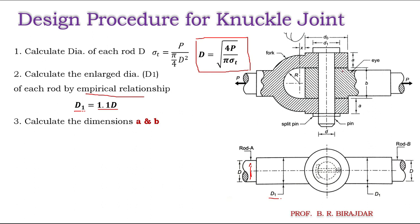The dimension a is the thickness of the fork, and b is the thickness of the eye end. These are found from empirical relations: a is equal to 0.75 times the diameter of the rod (a = 0.75D), and b is equal to 1.25D.